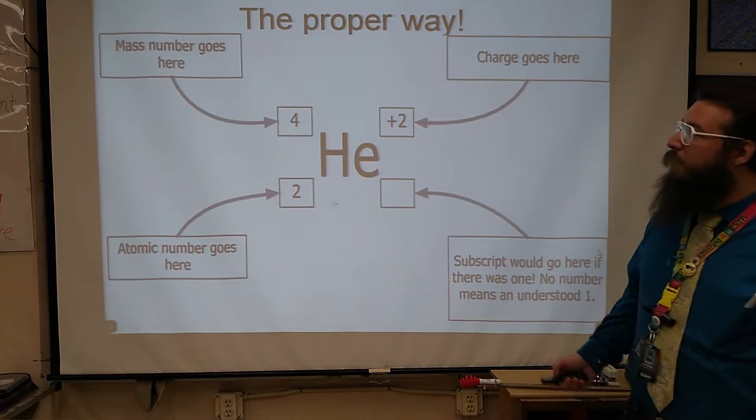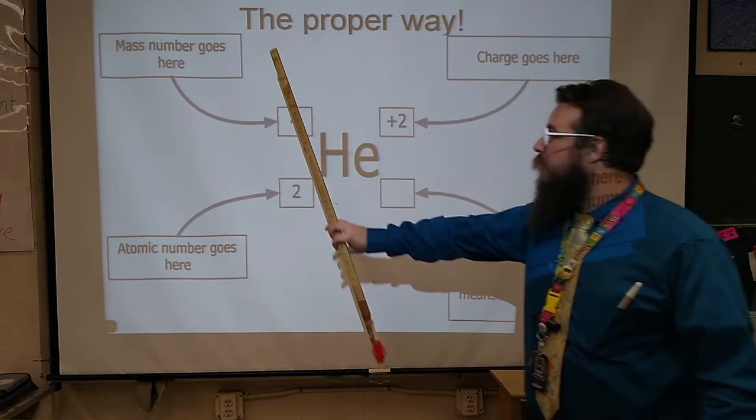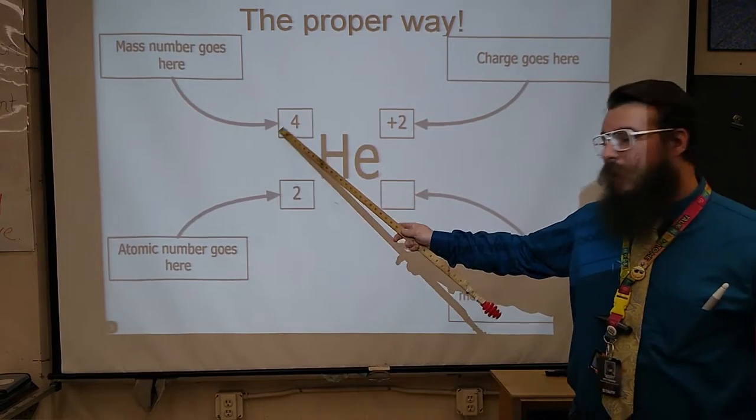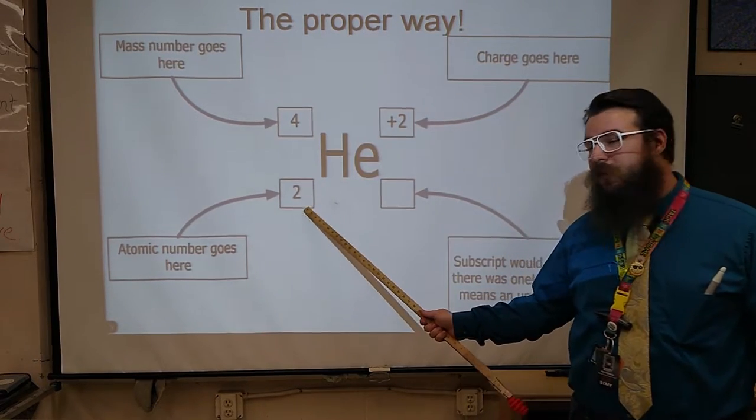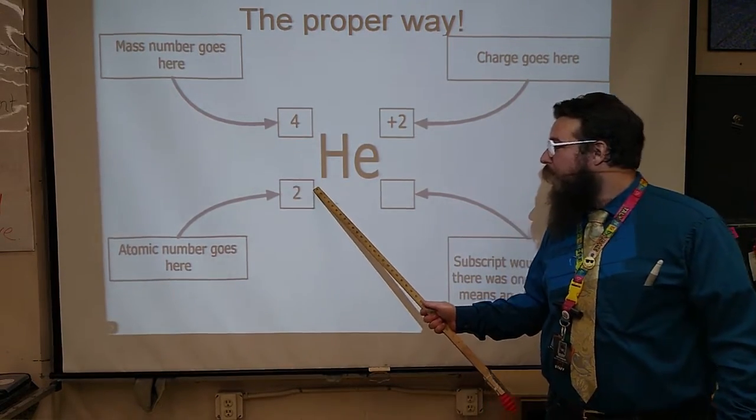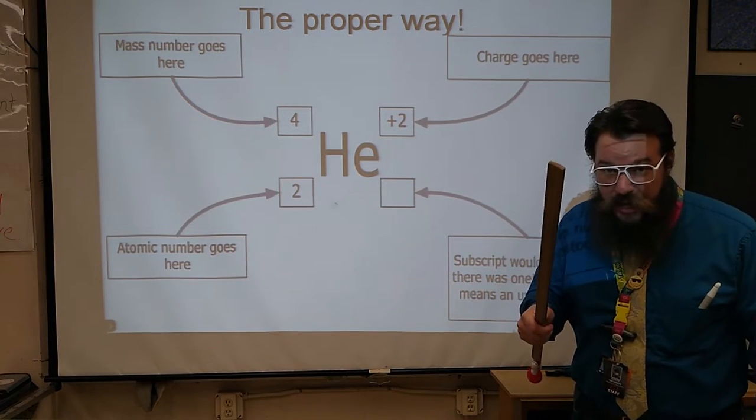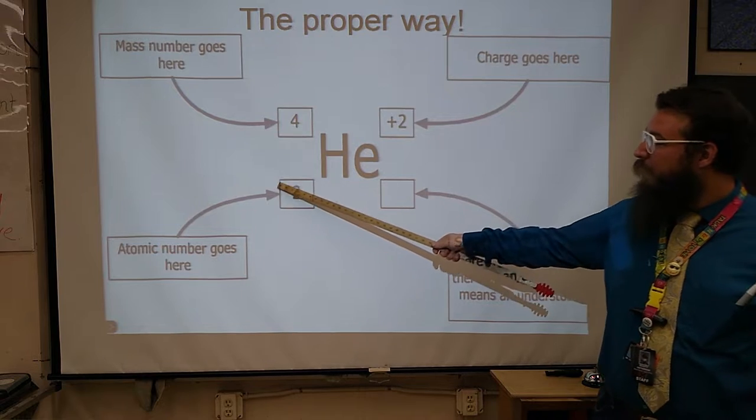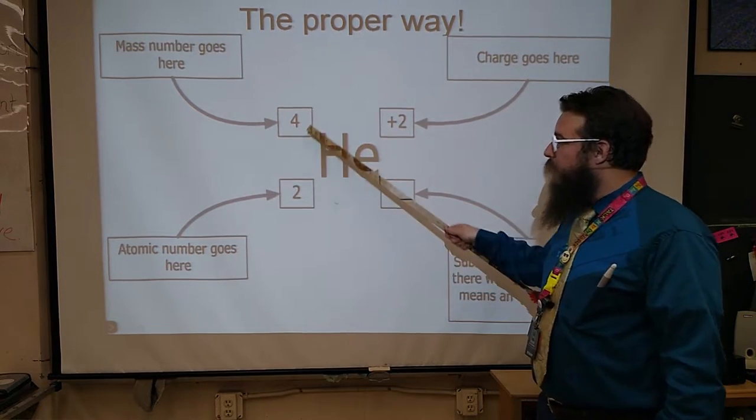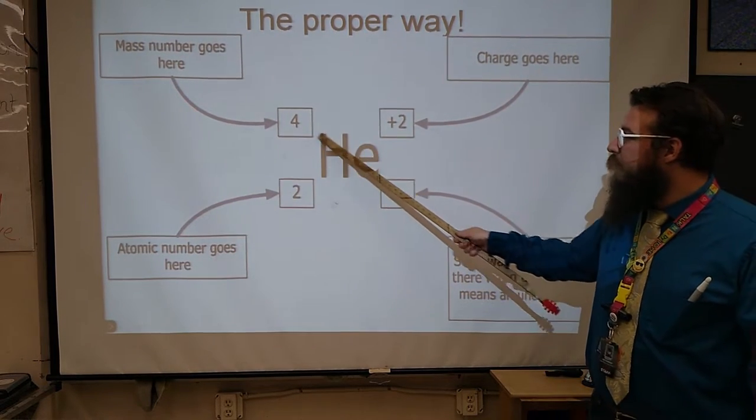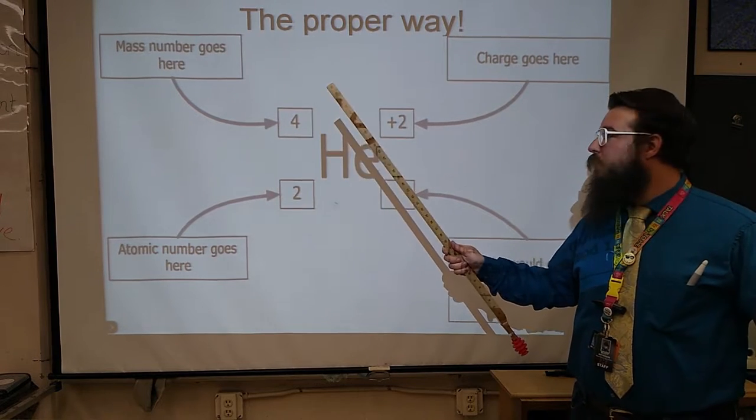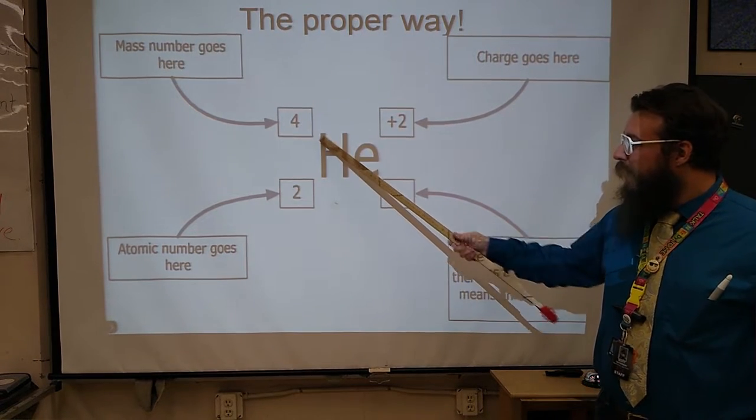So as a quick refresher, remember, the mass is going to go up here in the top left corner. The atomic number that tells us the number of protons goes here in the bottom left corner. Now, when we're writing chemical formulae, that's the plural of chemical formula, by the way. When we're writing different chemical formulae, we usually leave these two out. Unless you have a special isotope, then you may include the mass, but if you're using the normal mass, we're going to leave that out.